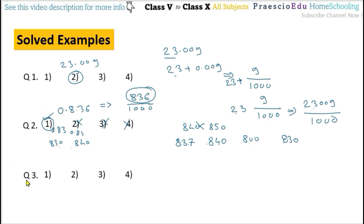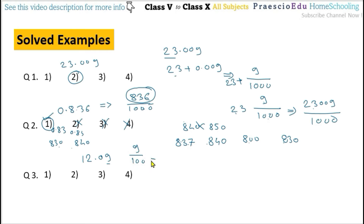Question number 3: what is the place value of the digit 9 in the number 12.0909? We need to find 9's place value. The 9 is at the hundredths place, meaning 9 by 100, which can be written as 0.09. Because after the decimal point, the first digit is the tenths place and the second is the hundredths place. This is given in option number 3.